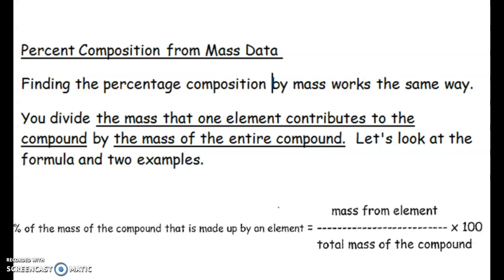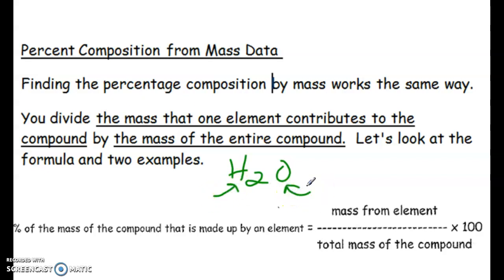Let's start talking about data with mass values. The mass of an element does not necessarily make up the entire compound. Going back to the water example, there are two elements that make up the entire compound, but the mass of one is different from the mass of the other because they have different molar mass values. The percentage is always: mass of one element you want to know the percent of, over the total mass, times 100.